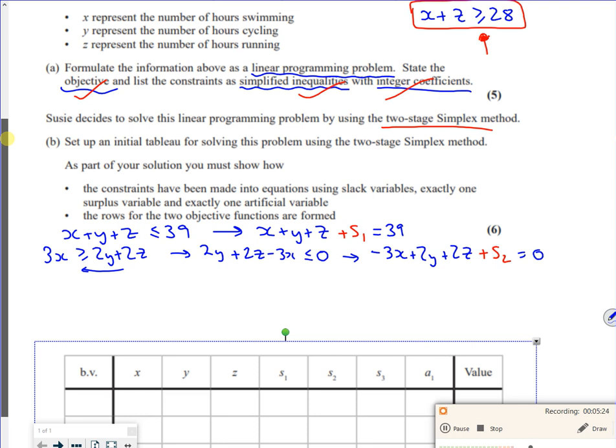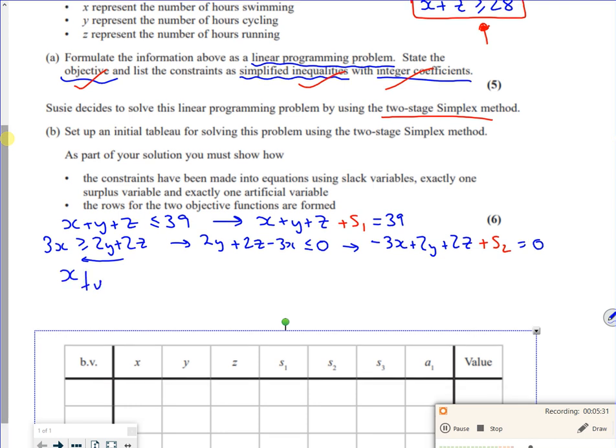Now I've got this last one, which is X plus Z is greater than or equal to 28. As you can see, this is already set up as a greater than or equal to. So this is the one that we need to take care of. I've got X plus Z minus s3 plus a1. So I drag it down and ping it back up to the line. That's equal to 28.